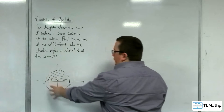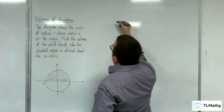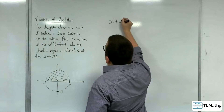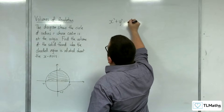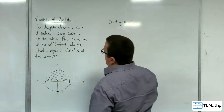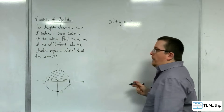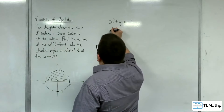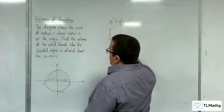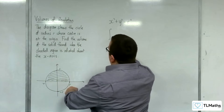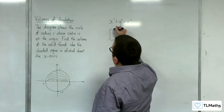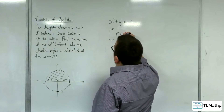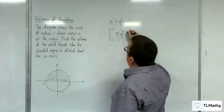The equation of the circle is x squared plus y squared equals r squared. We know that the volume will be the integral between minus r and r of pi y squared dx.